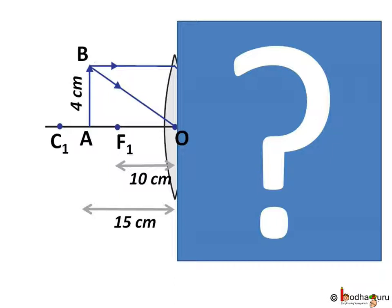Let us say a 4 cm tall object is placed perpendicular to the principal axis of a convex lens of focal length 10 cm. The distance of the object from the lens is 15 cm. And we need to find the nature, position and size of the image.